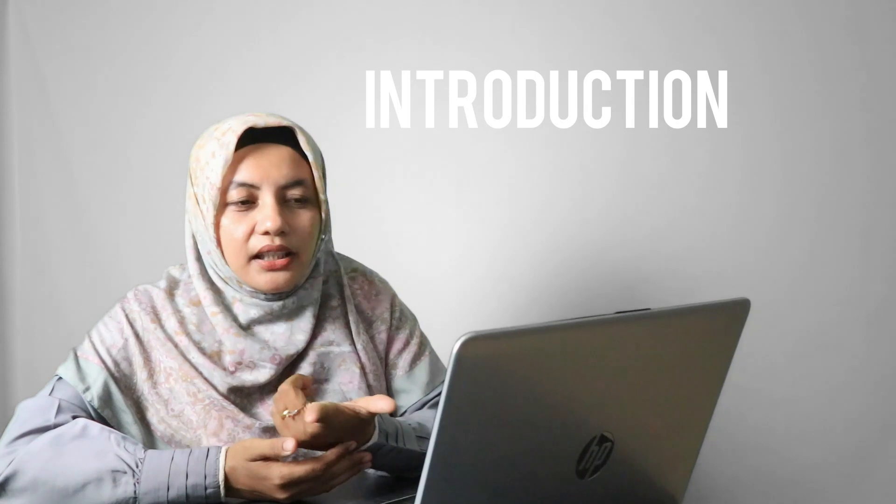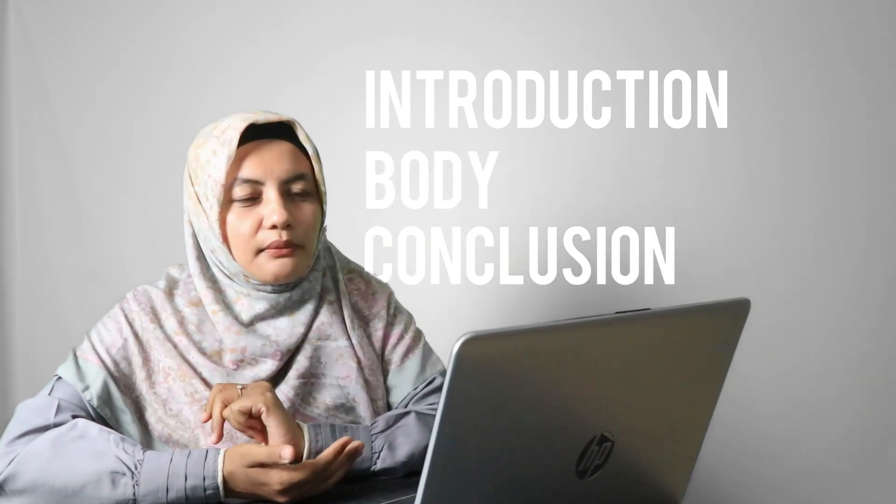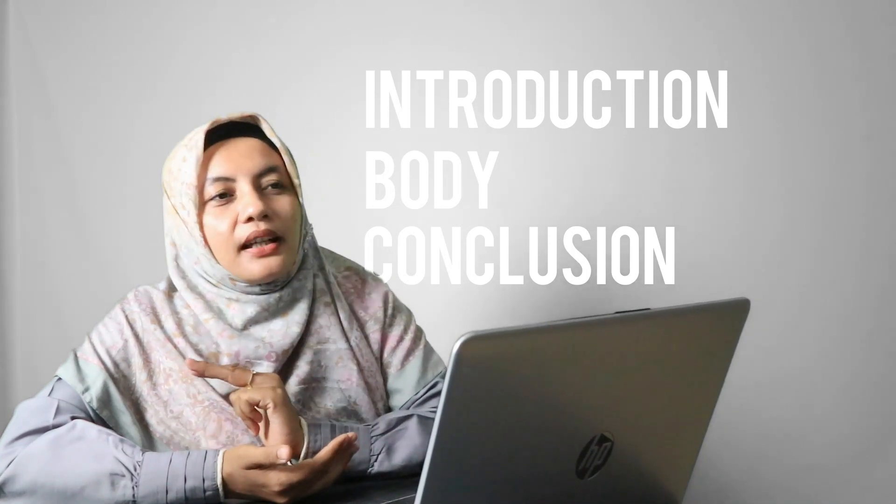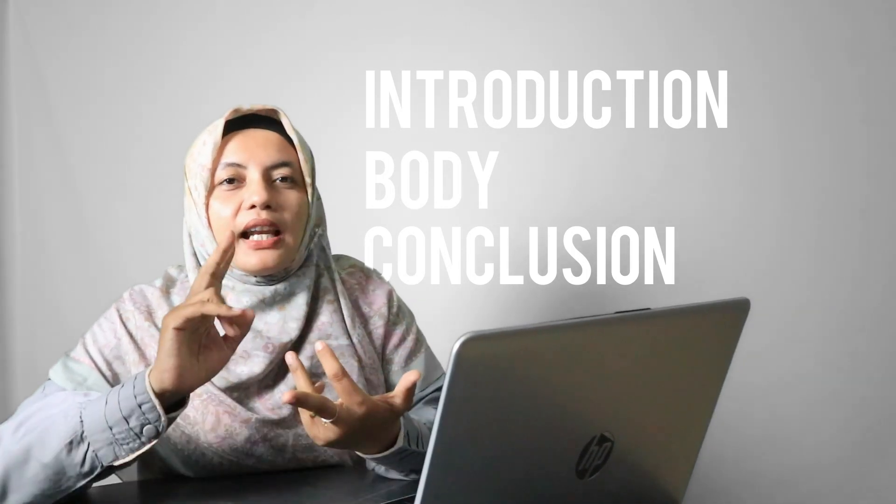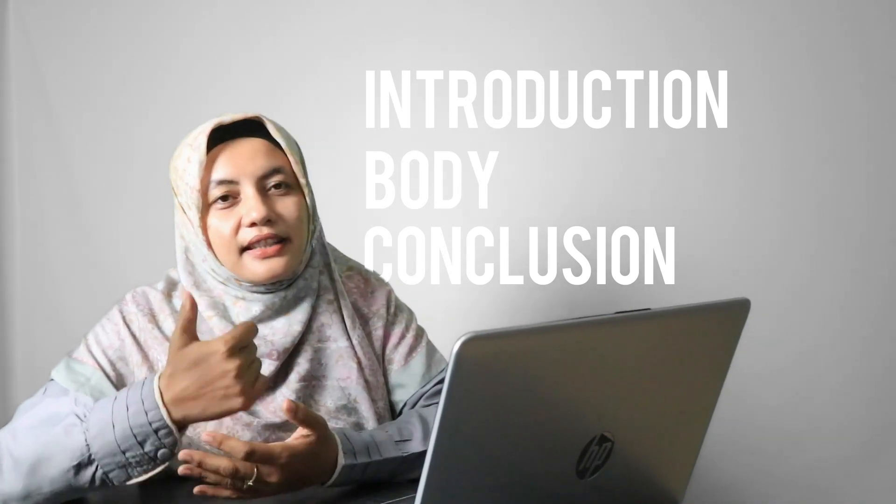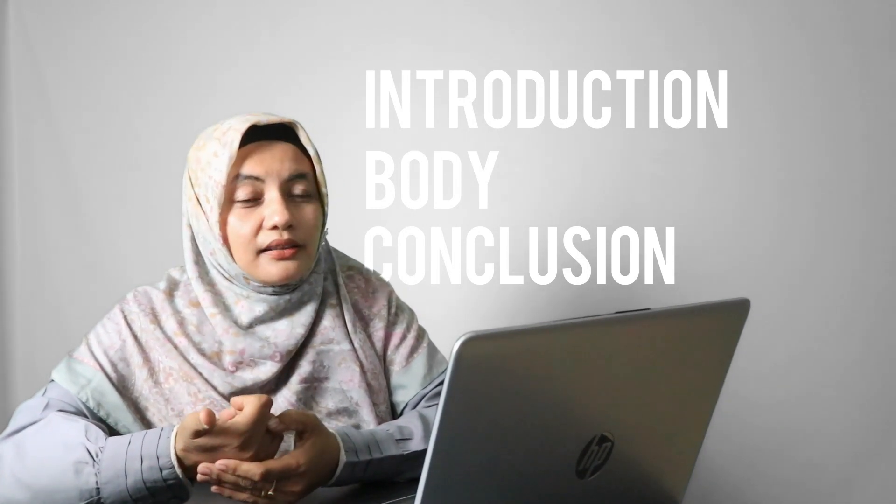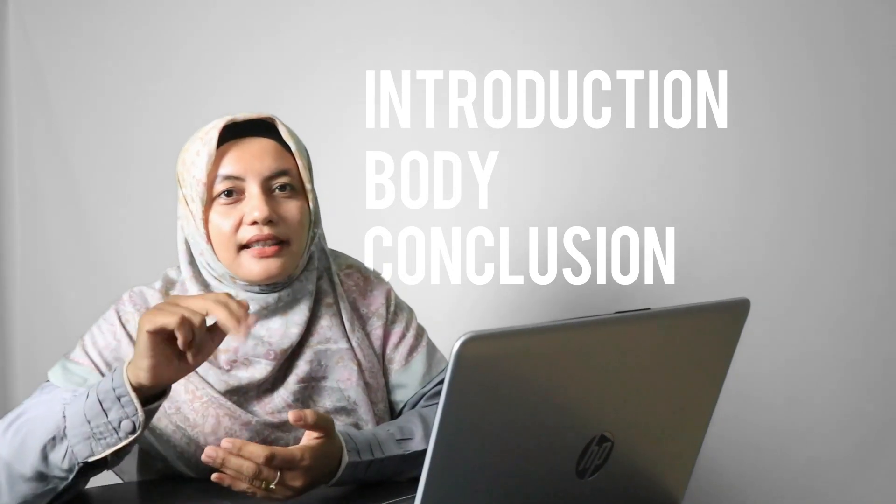In an academic text, there is a structure. First, there is an introduction, then the body, and third, the conclusion. These are the three main parts in a text. In the introduction, there is a thesis statement with keywords and supporting details.